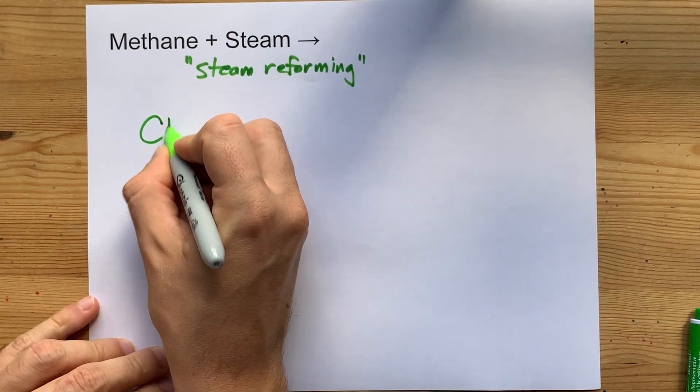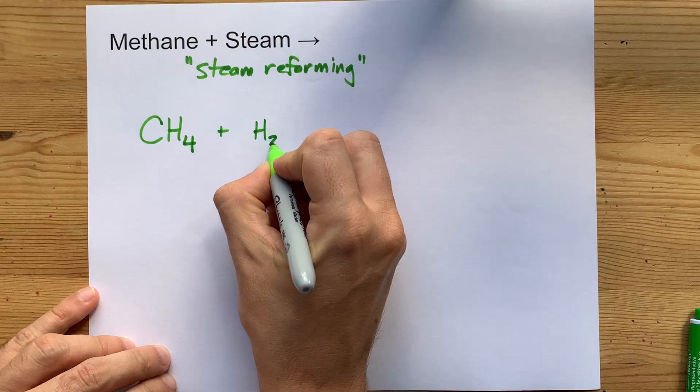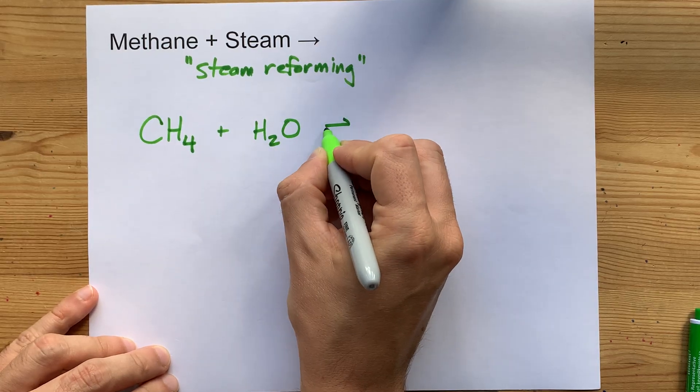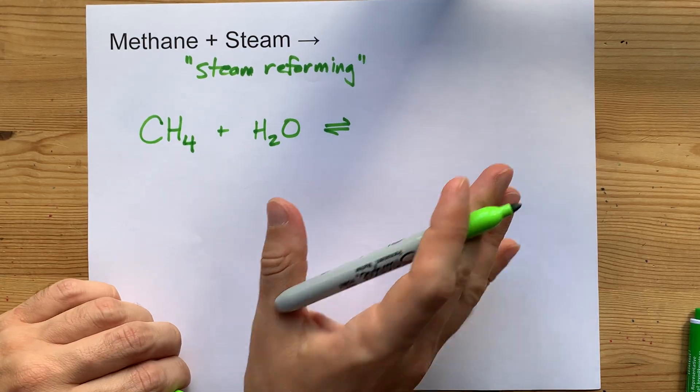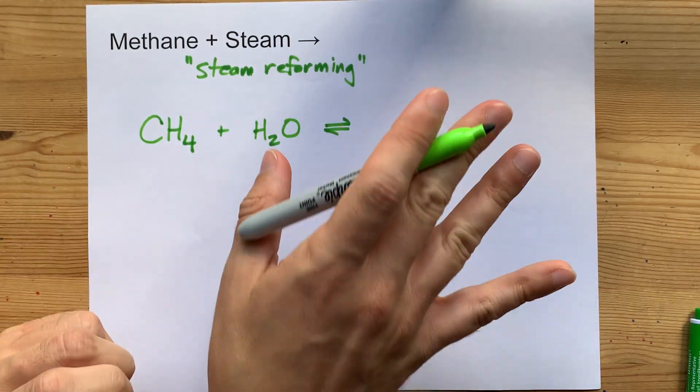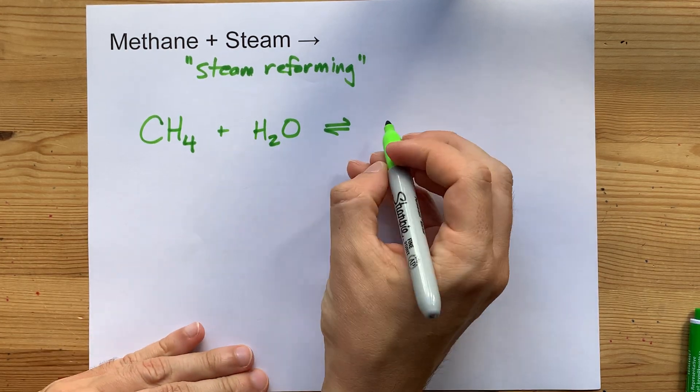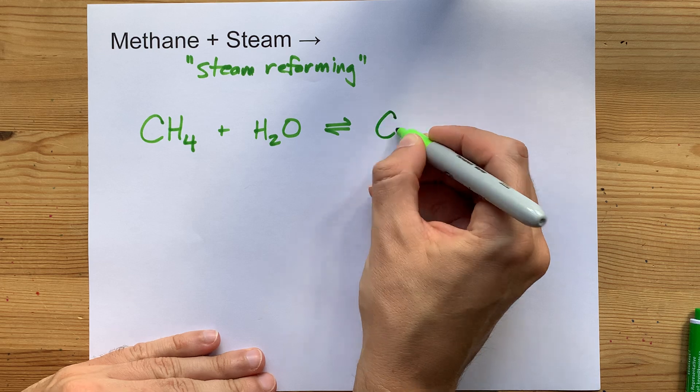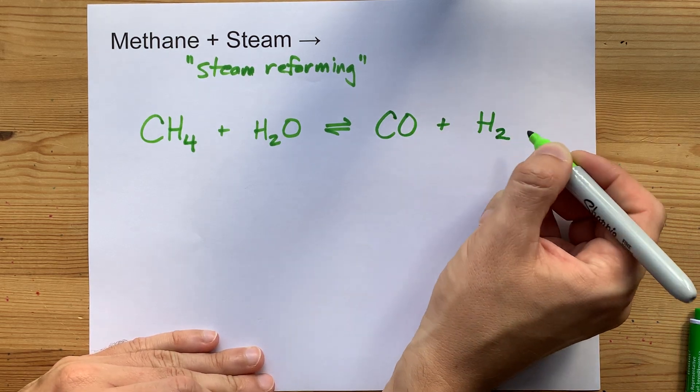By reacting CH4, or natural gas, or methane, with water, usually in the presence of a nickel catalyst to make the reaction go faster, even though the temperature is ridiculously high anyways, like 800 or 1,000 degrees Celsius, you can get these two molecules to react to form carbon monoxide and hydrogen gas.